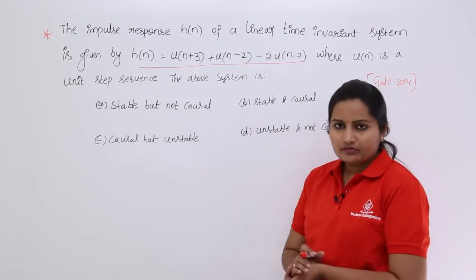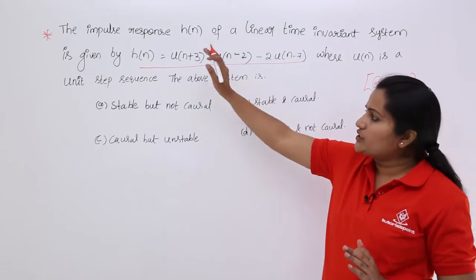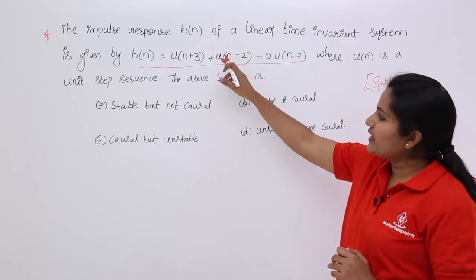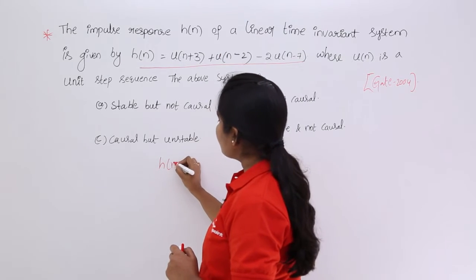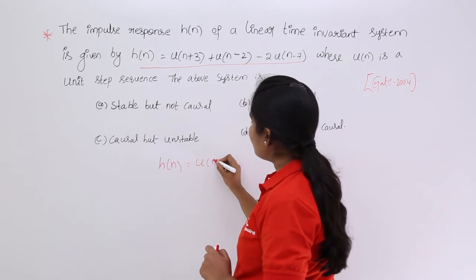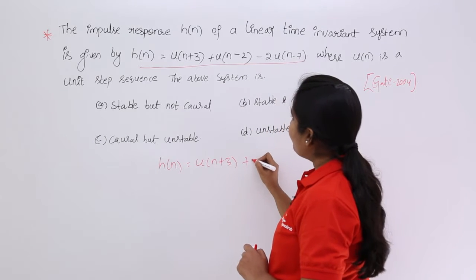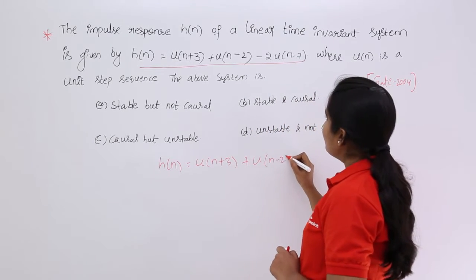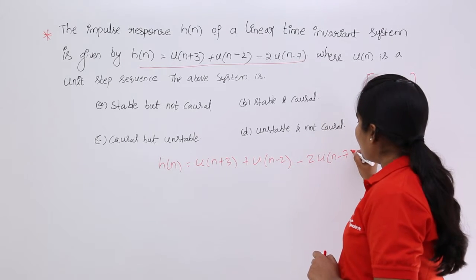Coming to this problem, h(n) is given as: h(n) = u(n+3) + u(n-2) - 2u(n-7). We will now check the stability of this system.